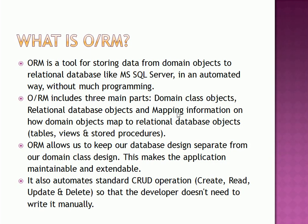Domain class objects are your classes, whereas relational database objects are your tables, views, and stored procedures. Mapping information defines which table is mapped to which class. ORM also allows us to keep our database design separate from our domain class design, which makes the application maintainable and extendable. It also automates the standard CRUD operations — Create, Read, Update, and Delete — so the developer doesn't need to write this part manually.